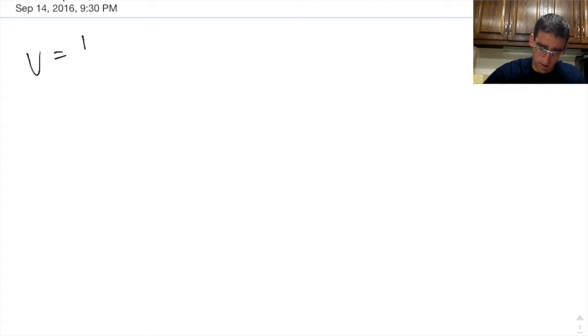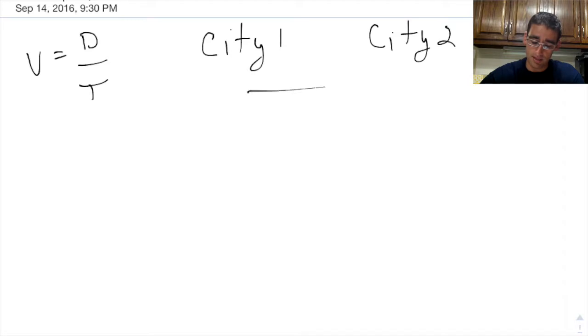So velocity we know is distance divided by time. In this activity that we're doing, you guys are deciding the distance and the time. You're going to have city one and city two, and you need to find out what the distance is. You're going to use Google to find the distance from city one to city two.